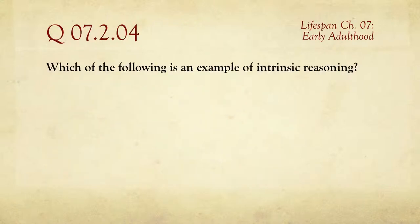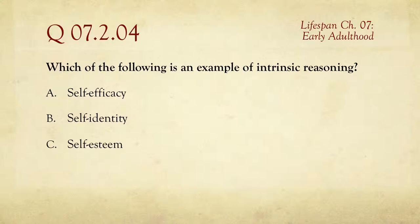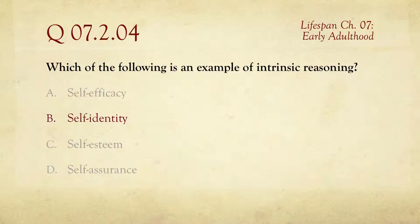Question number four: which of the following is an example of intrinsic reasoning? The choices are self-efficacy, self-identity, self-esteem, and self-assurance. Intrinsic has a lot to do with things being rewarding on their own without being linked to something else, and in this case the answer is going to be self-identity — who you are, not the rewards you get from things like efficacy, esteem, and assurance.